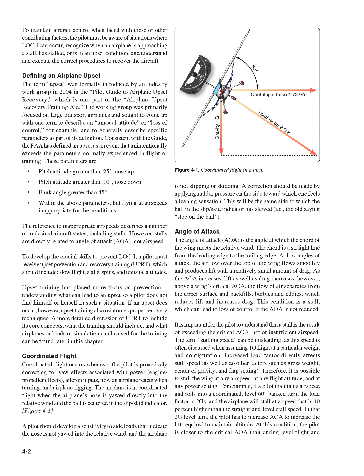Coordinated flight occurs whenever the pilot is proactively correcting for yaw effects associated with power, engine/propeller effects, aileron inputs, how an airplane reacts when turning, and airplane rigging. The airplane is in coordinated flight when the airplane's nose is yawed directly into the relative wind and the ball is centered in the slip/skid indicator. A pilot should develop a sensitivity to side loads that indicate the nose is not yawed into the relative wind and the airplane is not slipping or skidding.